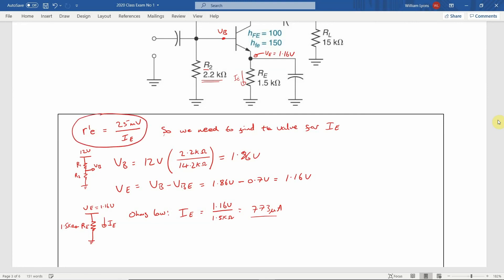As stated previously, we can calculate the AC emitter resistance written as R'E by dividing 25mV by the emitter current IE. So entering the calculated value for IE, we get an AC emitter resistance for this circuit of 32.3 ohms.